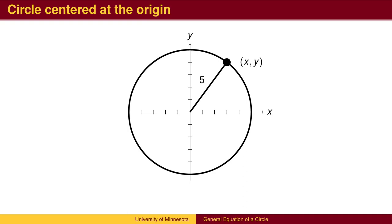How do we find the equation of a circle? If the circle is centered at the origin, we need to find a relation involving the arbitrary point xy. For this example, the radius is 5.